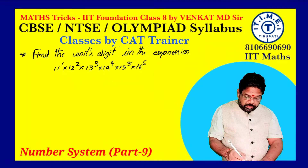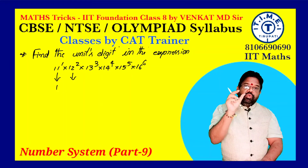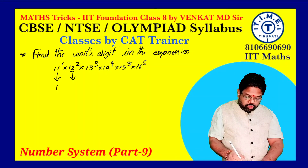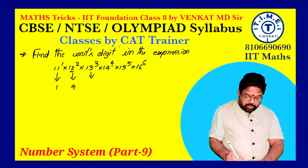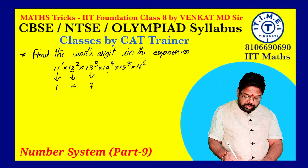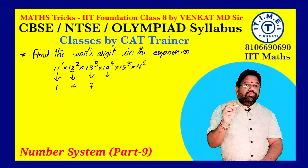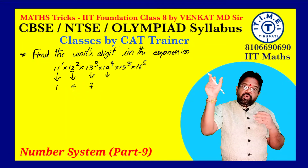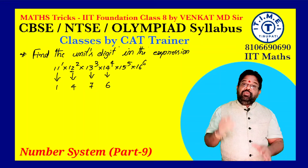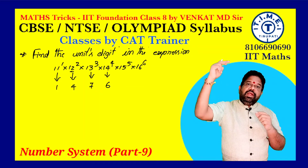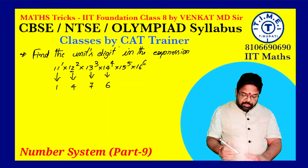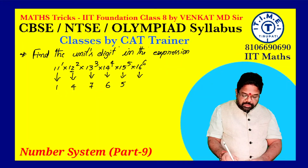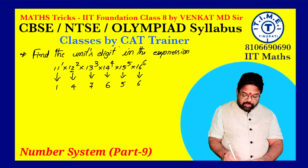We need only the unit's place value. For 11^1, unit's digit is 1. For 12^2, consider only the units digit 2: 2 squared is 4. For 13^3, consider 3: 3 cubed is 27, so unit's digit is 7. For 14^4, consider 4: 4 to an even power has unit's digit 6 — since the power is even, unit's digit is 6. For 15, any power of 5 has unit's digit 5. For 16, any power of 6 has unit's digit 6.